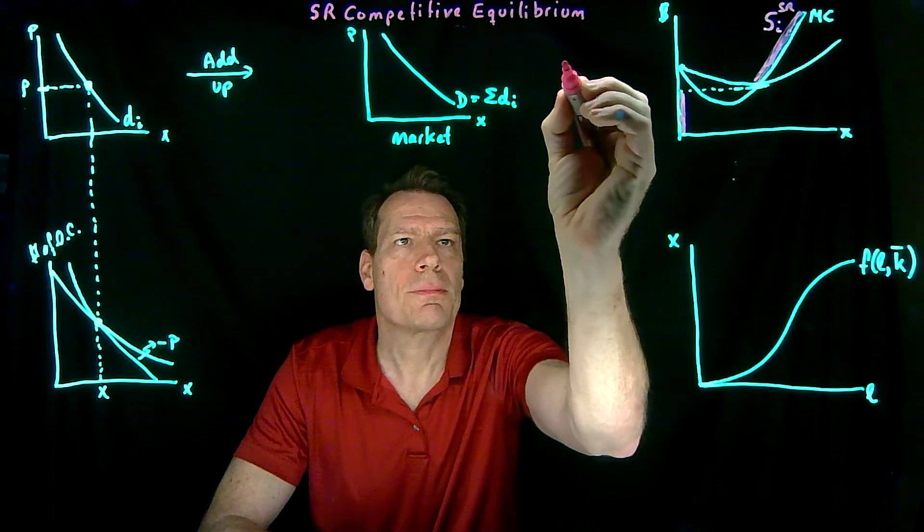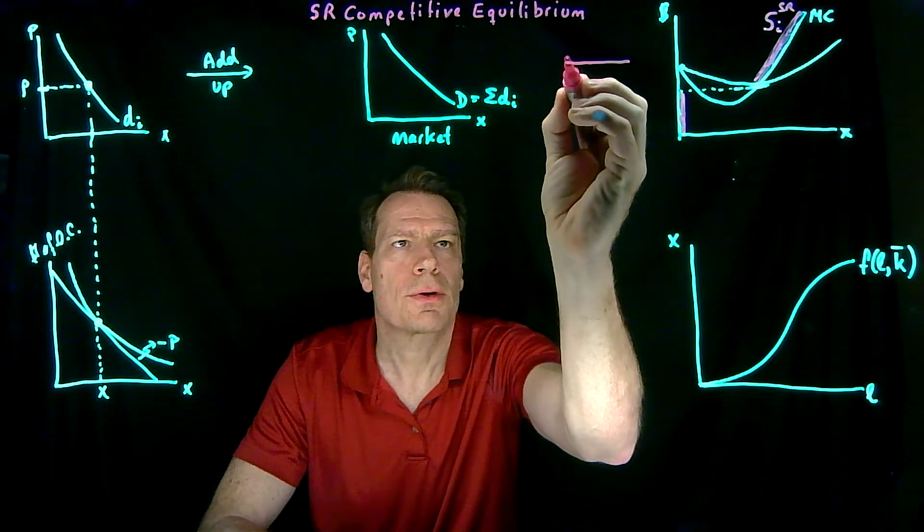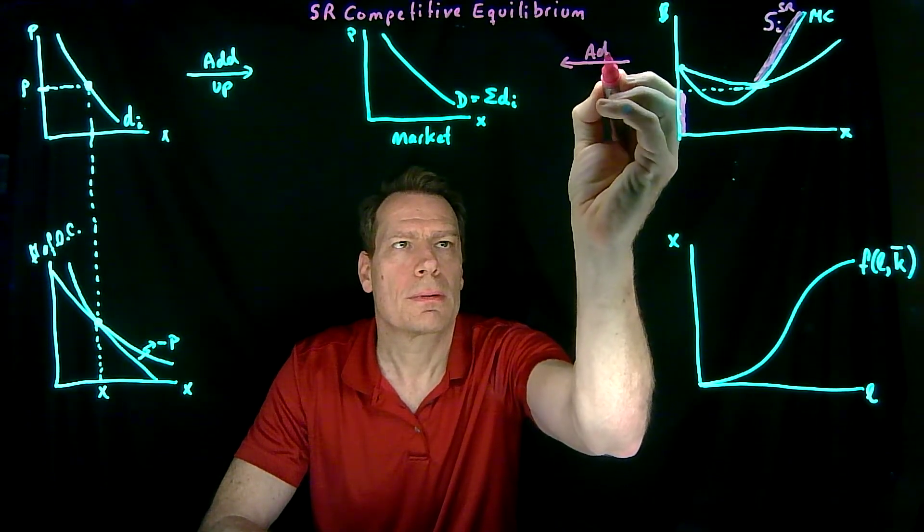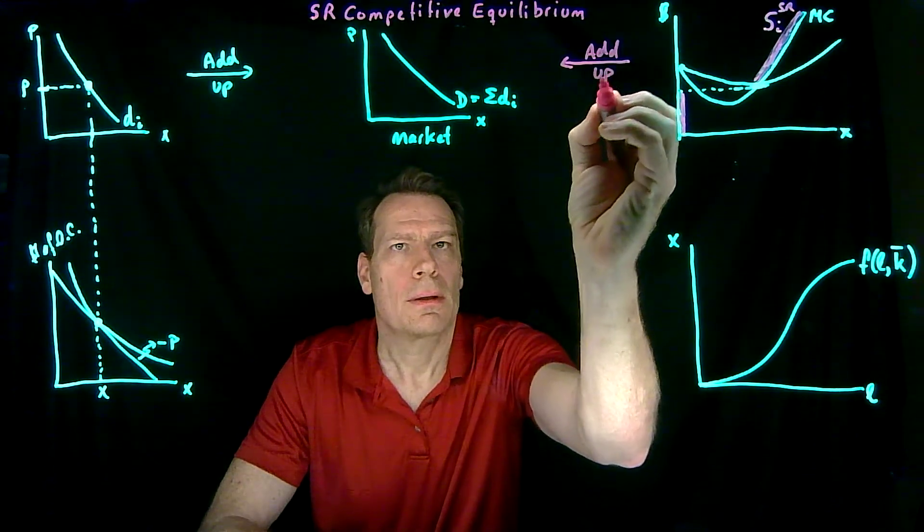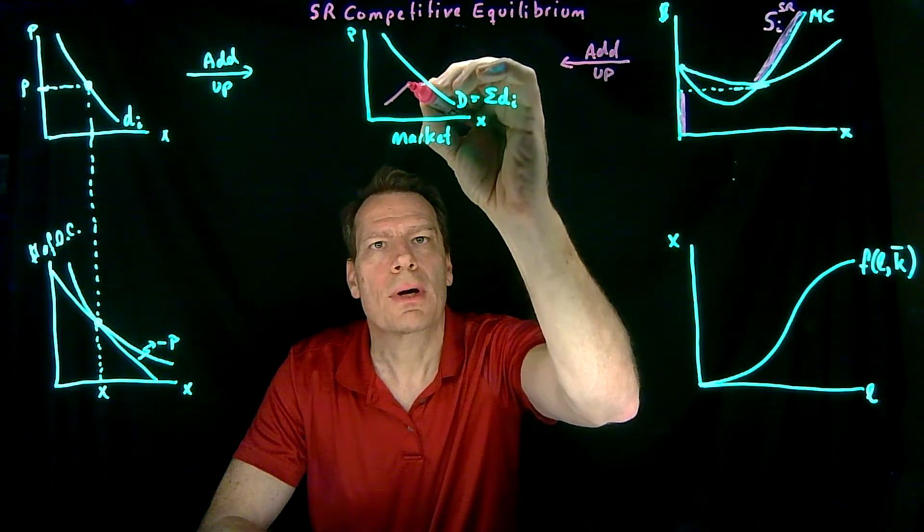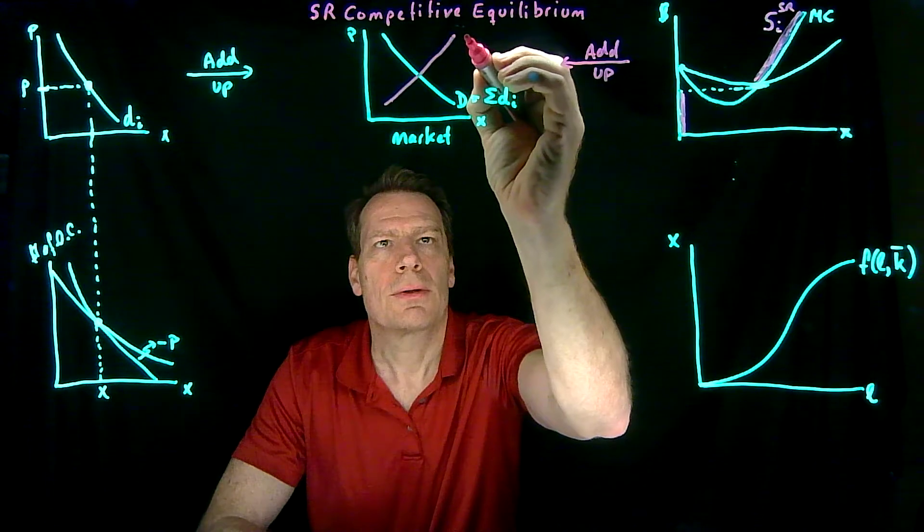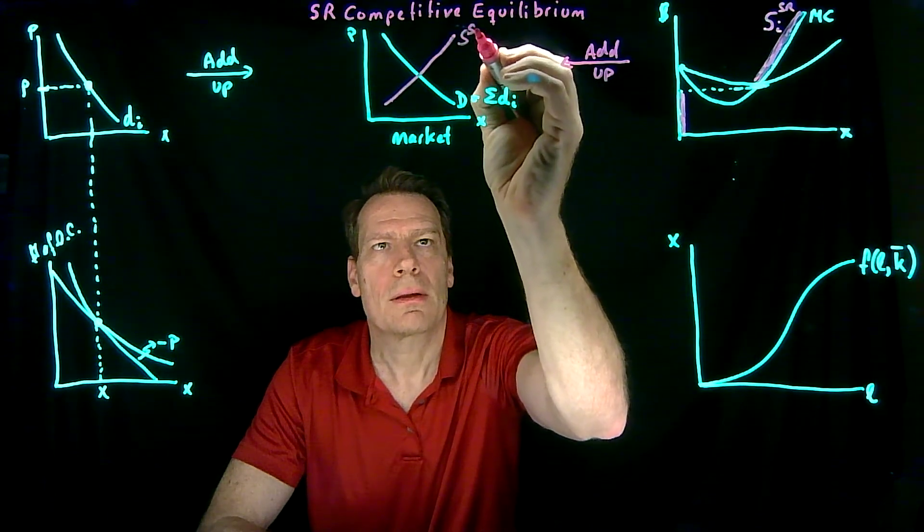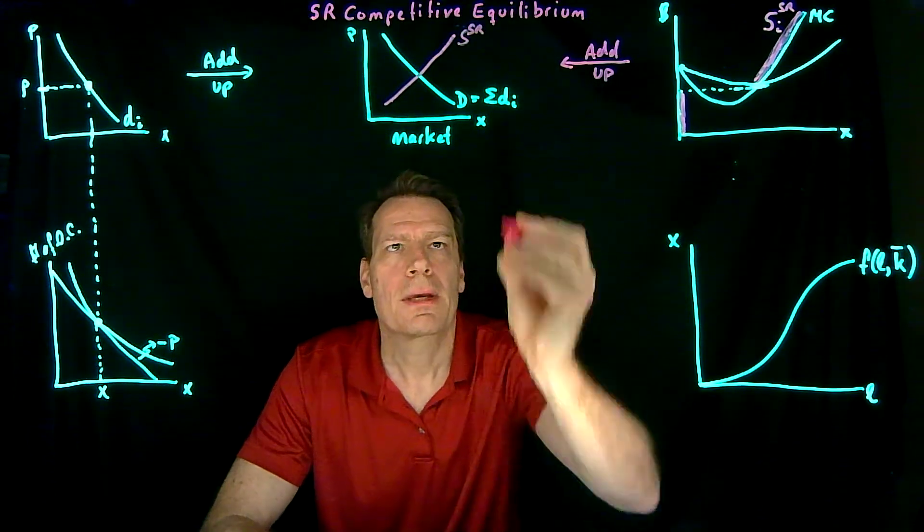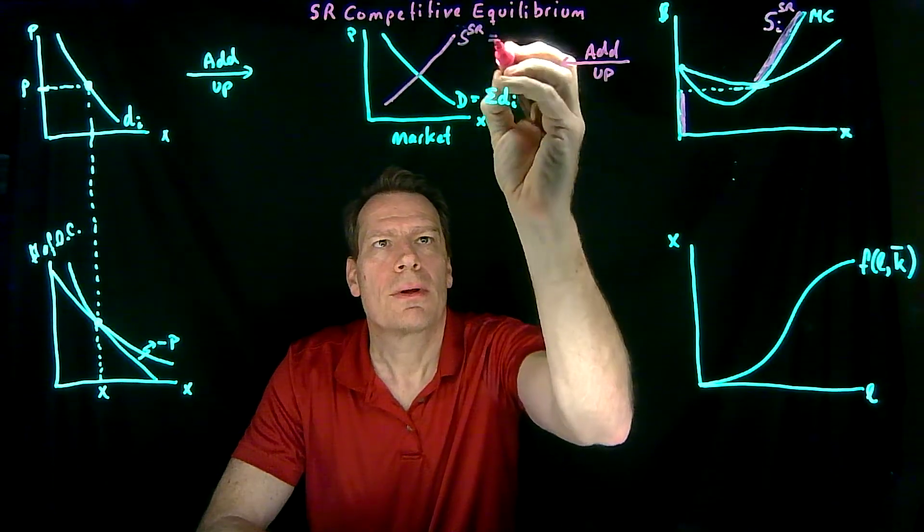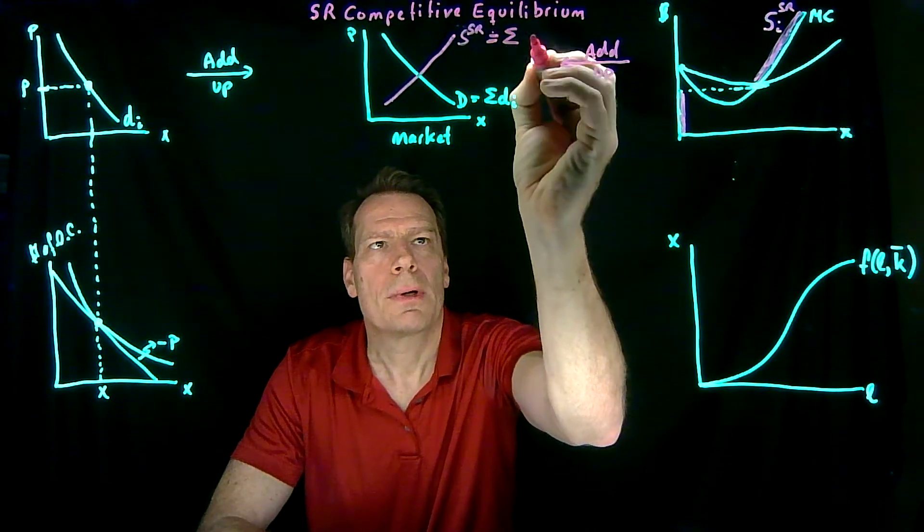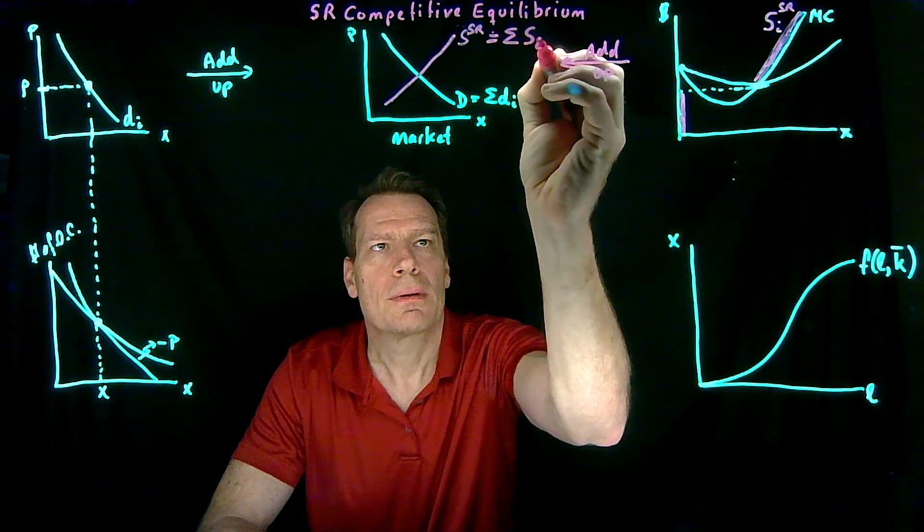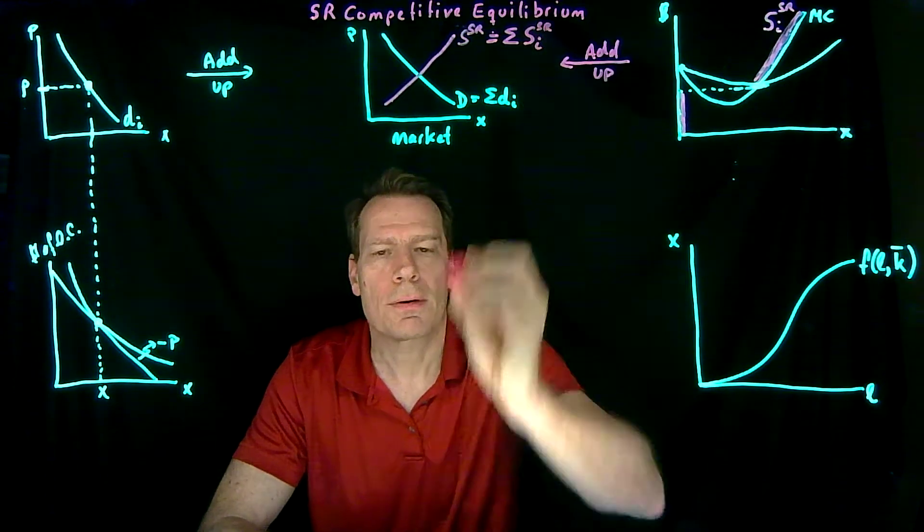And we can add those up, just like we added up demand curves for consumers, to get the short run market supply curve. So this will be the short run market supply curve. And it's just equal to the sum of these individual short run supply curves.